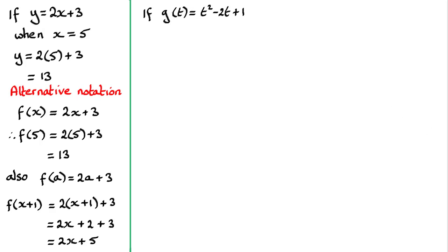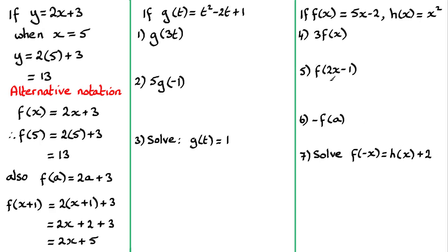So the questions that I've got here that we're going to work through: we've got to find out g of 3t in this second one, 5g of minus 1, and then solve this equation g of t equals 1. Now I'm going to run through these three examples and I'm going to get you to try these remaining four questions. You might even want to have a go at these, so do pause the video at any point. But I will run through these and then we've got a summary down here which I'll give you time to have a go at.